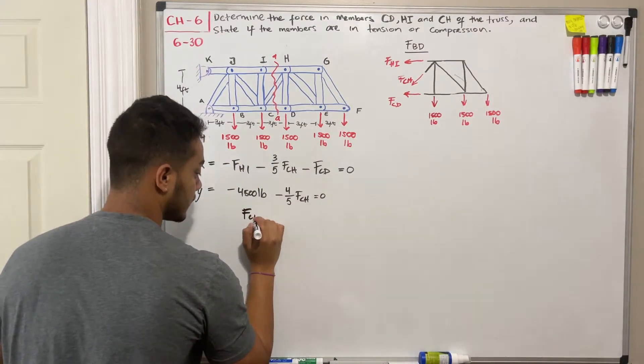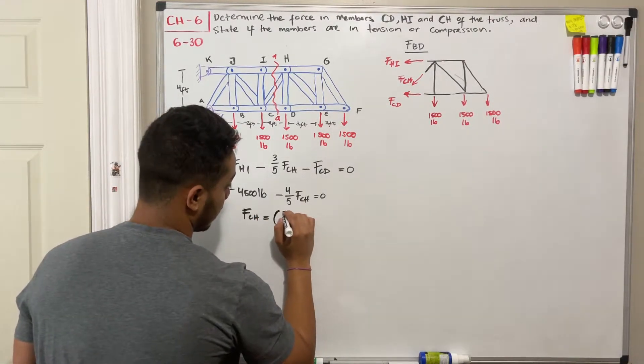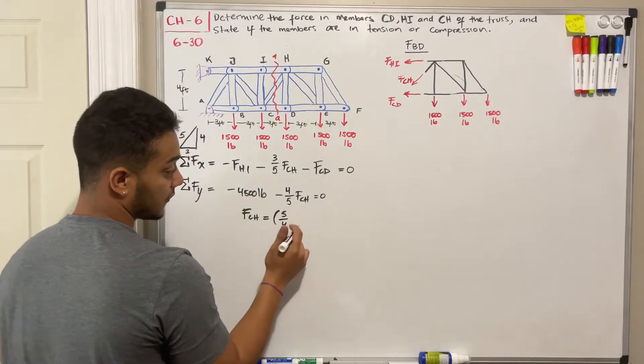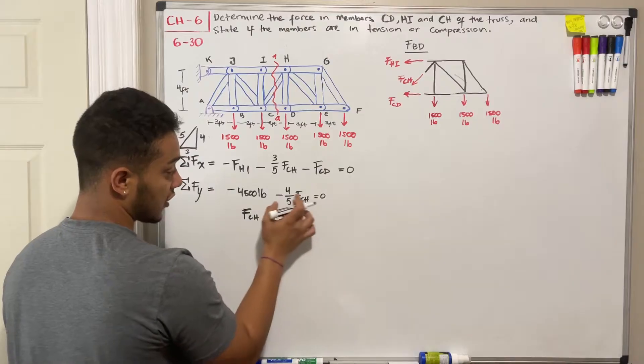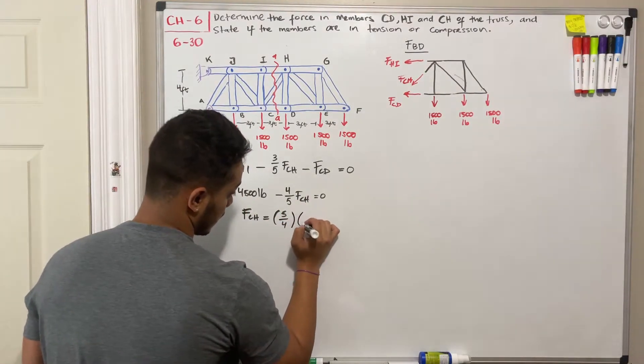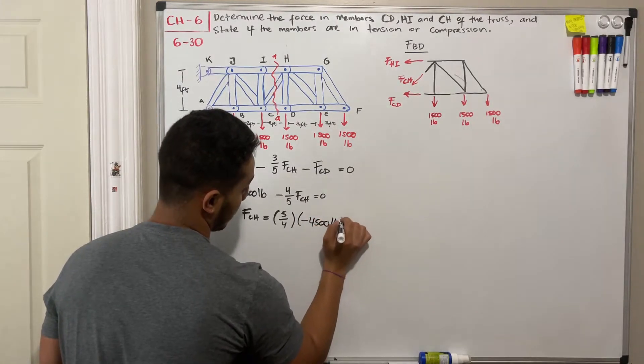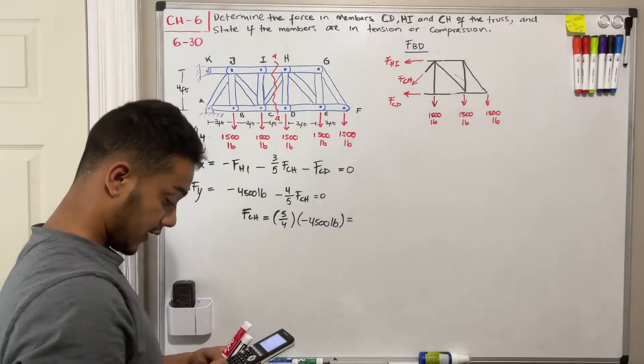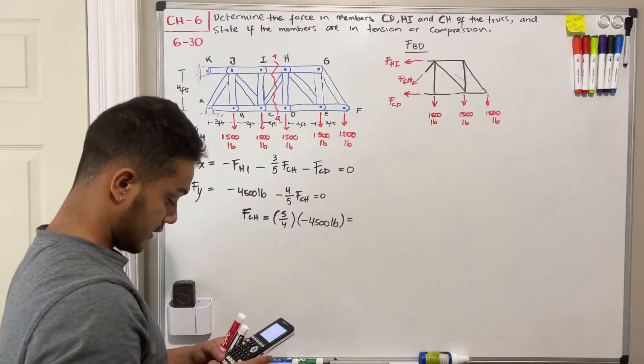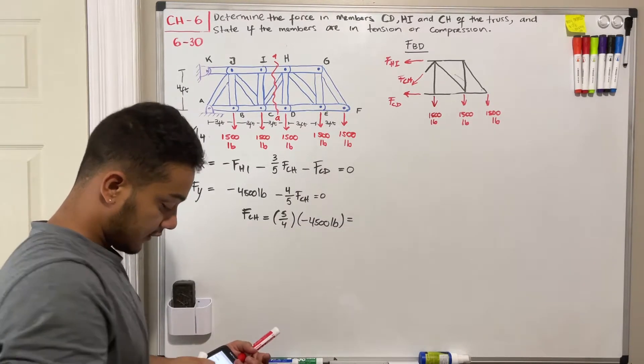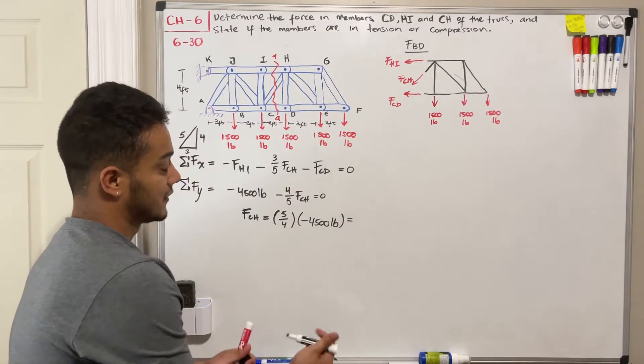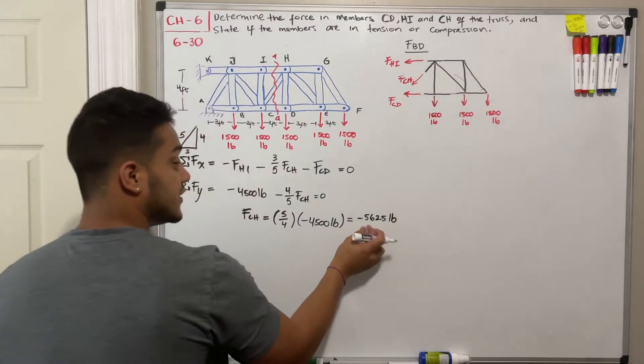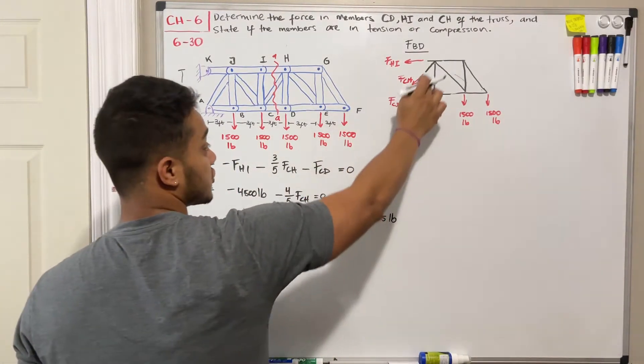Okay. So if we solve for FCH, what do we get? Well, we'll have five out of four. So we're going to pass this guy to the other side. But we're going to multiply by five and divide by four. So if I move this guy to the other side, this becomes positive. But this one remains negative on the other side. So negative 4500 pounds. Okay. We're going to take our calculator, solve this. We got five divided by four, multiply by negative 4500. And that will give me negative 5625 pounds. So negative 5625 pounds. Okay. This negative means that my force is in the opposite direction, meaning in compression.